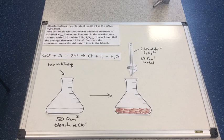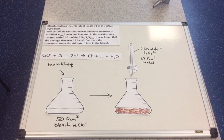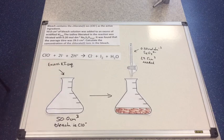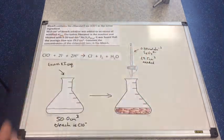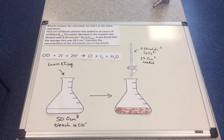The last example involves bleach. Bleach contains the chlorate(I) ion, ClO⁻ — that's the active ingredient. We've got 50 cm³ of bleach reacted with excess KI solution, producing iodine, so the flask turns brown. The iodine produced is titrated with 0.2 mol dm⁻³ sodium thiosulfate solution and the average titre is 29.5 cm³. We have to calculate the concentration of the ClO⁻ ion in the bleach.